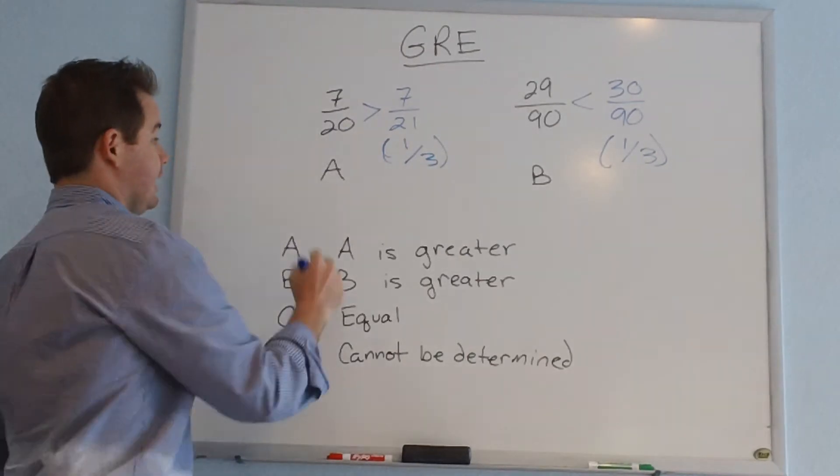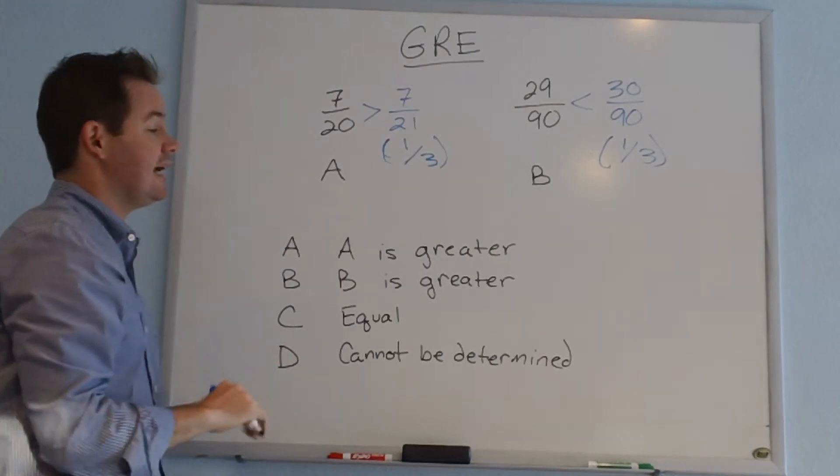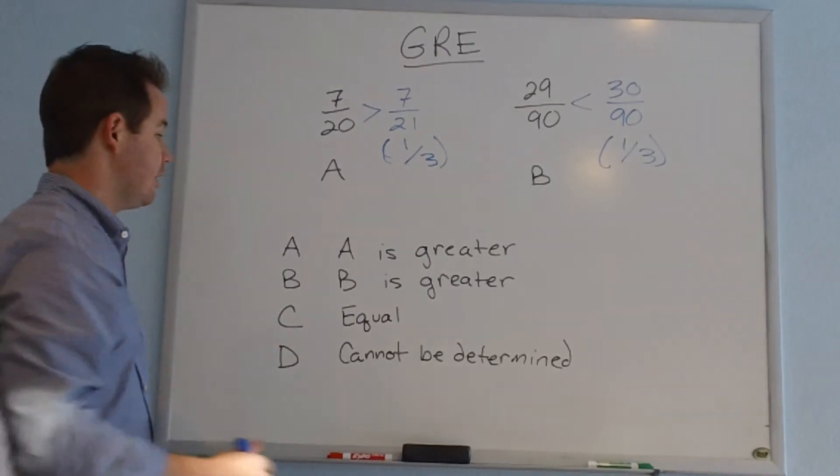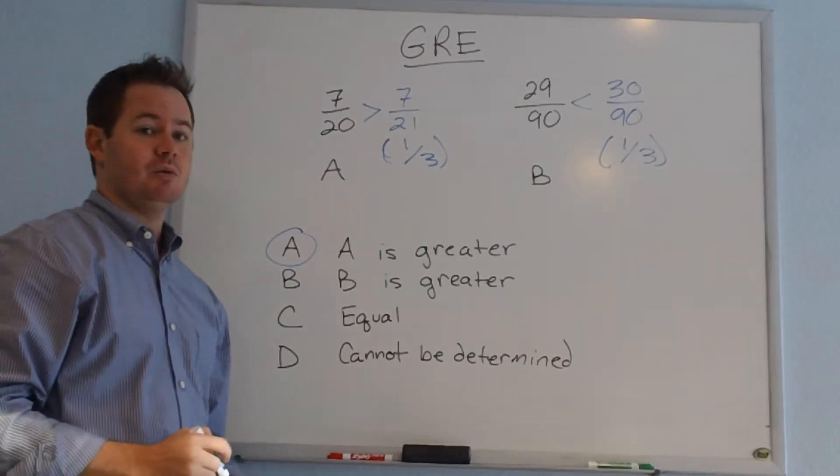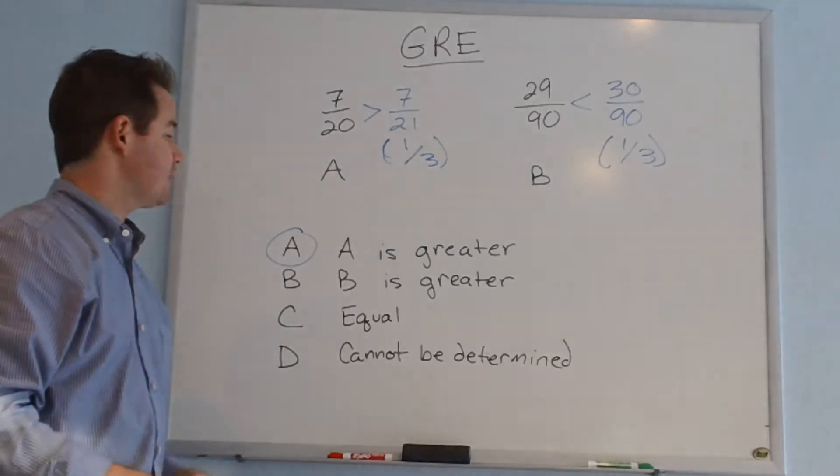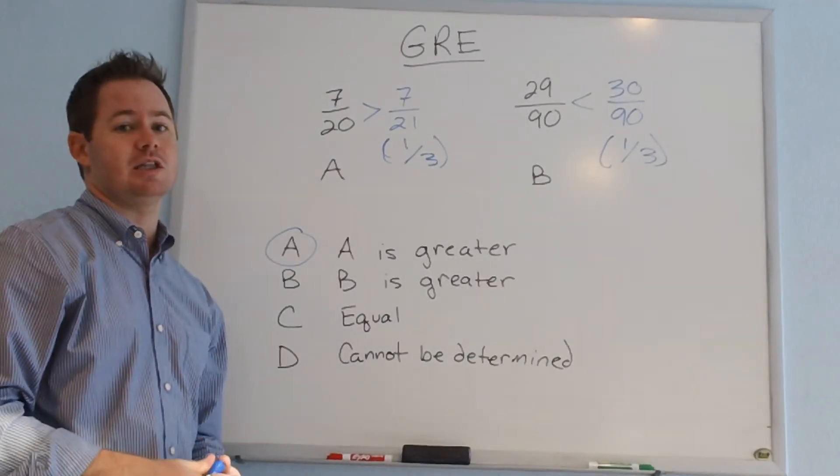column A, in this case, is greater than 1 third, and column B is less, so column A has to be greater than column B. And that would leave us with answer choice A. We can go ahead and pick that answer choice without having to write out complex calculations or do long division to get the answer correct.